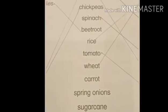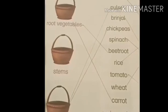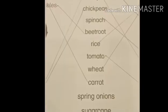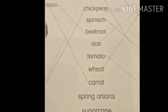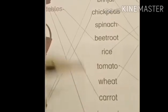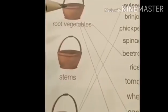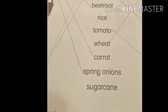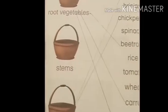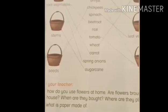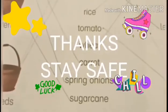Next one is carrot. Carrot is a root vegetable, so we will match carrot with root vegetables. Next is spring onions — spring onions are harapias, so it will go in the root vegetable basket. Next is sugar cane, and sugar cane is a stem, so it will go in the stems basket. I hope you have done this with me. Thank you and stay safe.